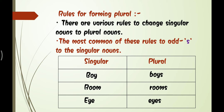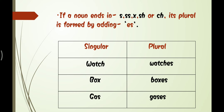Moving on to the next rule. If a noun ends in S, double S, X, SH, or CH, its plural is formed by adding ES.